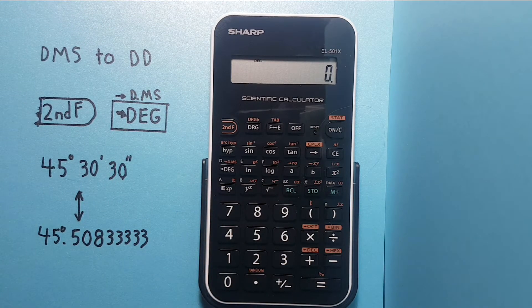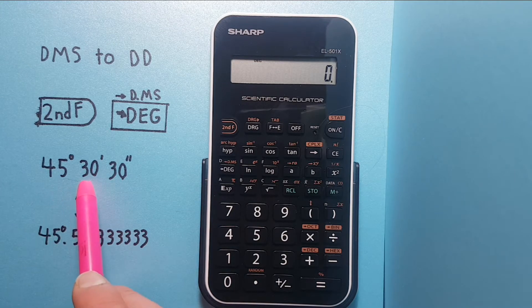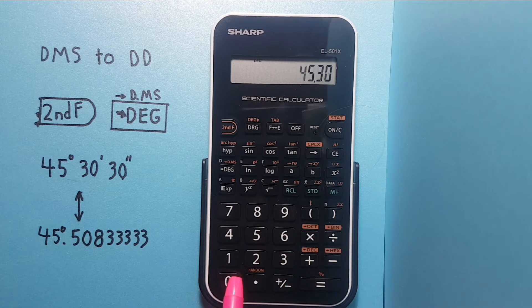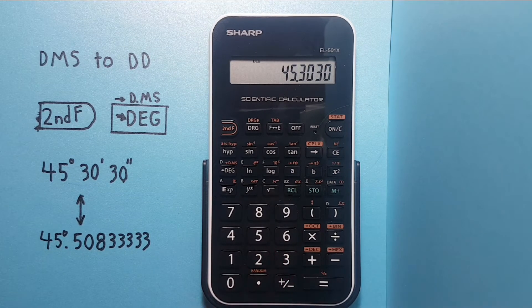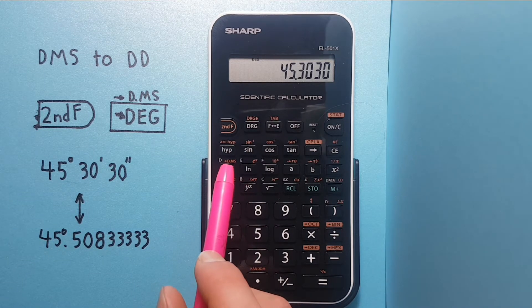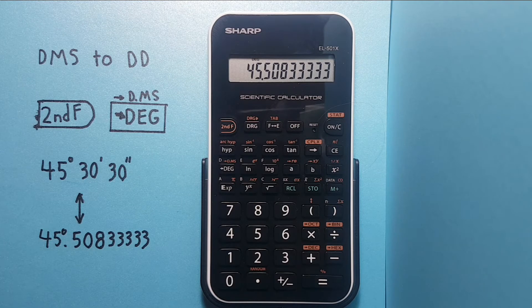Let's say we start out with 45 degrees, 30 minutes, 30 seconds. We can place this on the screen by typing 45.3030. Now if we wanted to convert this to decimal degrees we would press the arrow DEG key. This changes our number into decimal degrees.